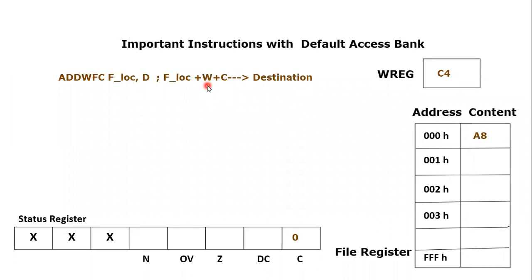We will be adding file register location plus working register plus carry as well. Carry is part of the status register, which is why we have also shown the status register in this tutorial. C is right now zero, so we will be adding the carry flag and the result will go to the destination. This destination is decided upon the D bit. If D is equal to zero or W, then destination would be the working register. If D is equal to one or F, then destination would be any file register location.